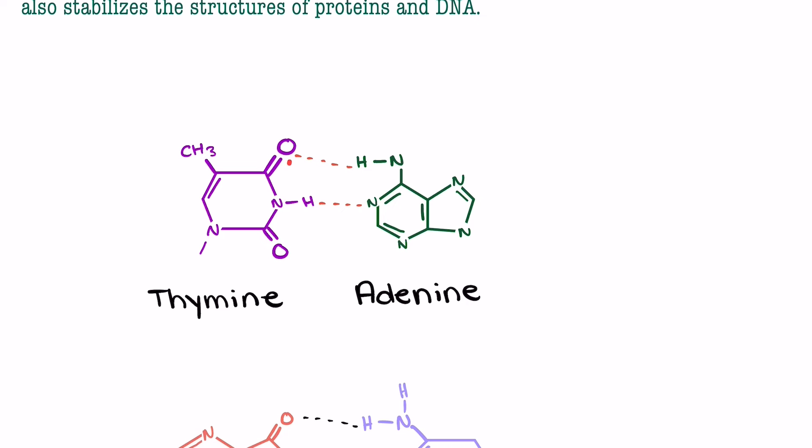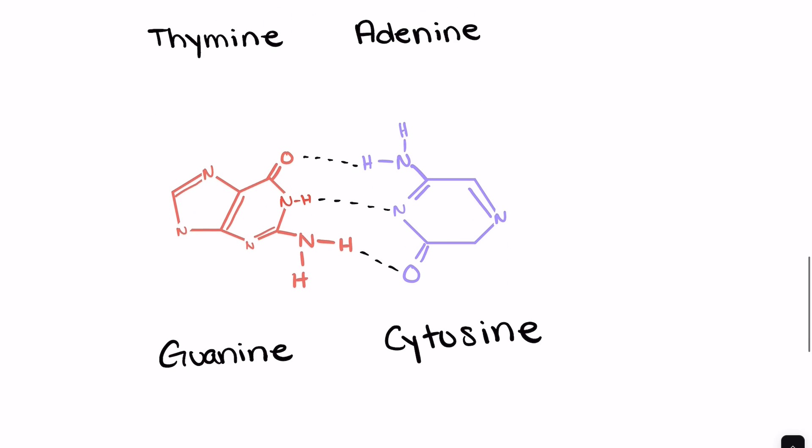And you'll see here that we have an oxygen and a hydrogen here, and each of these have hydrogen bonds with neighboring atoms. Here we have a hydrogen and an oxygen and a hydrogen and a nitrogen, and then the same thing over here. Because of the structure of guanine and cytosine, these pair to one another.